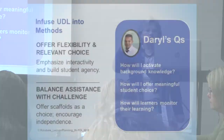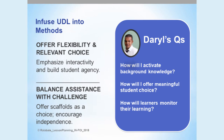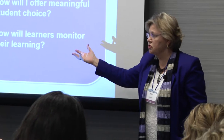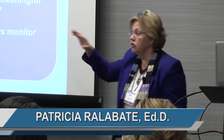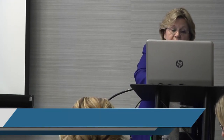The next step — methods, materials, and media. Darrell's questions are: how do I activate background knowledge for this lesson? What methods do I use? How do I offer meaningful student choice? How will learners monitor their own learning? It's all about offering relevant choices and flexibility, thinking about the fact that not all students have to do the same thing, and using methods and scaffolds that will address the learner variability that exists within the room.